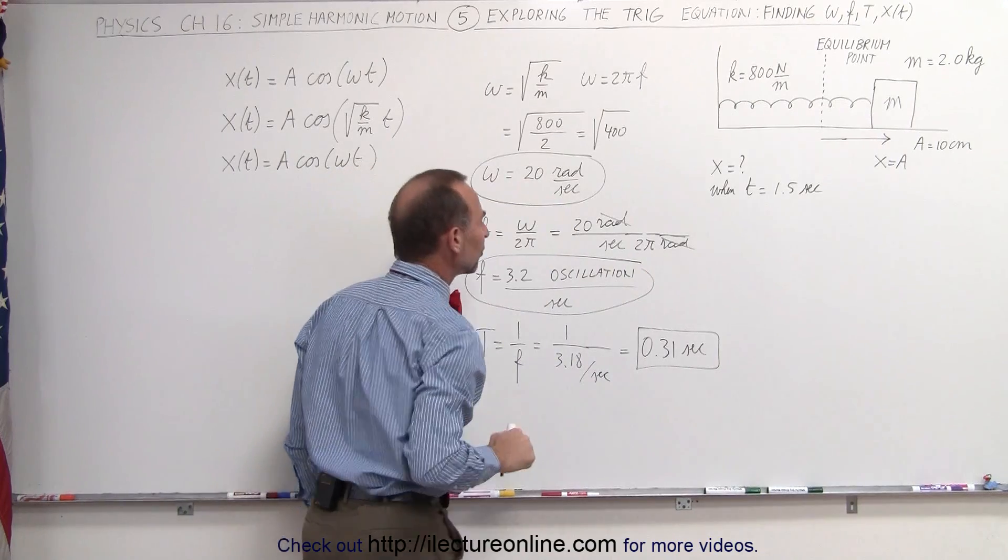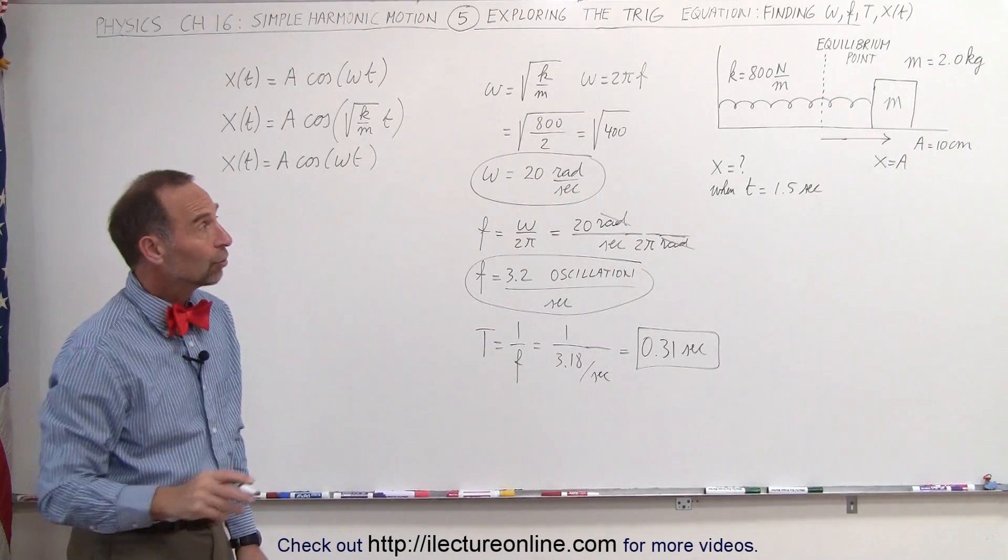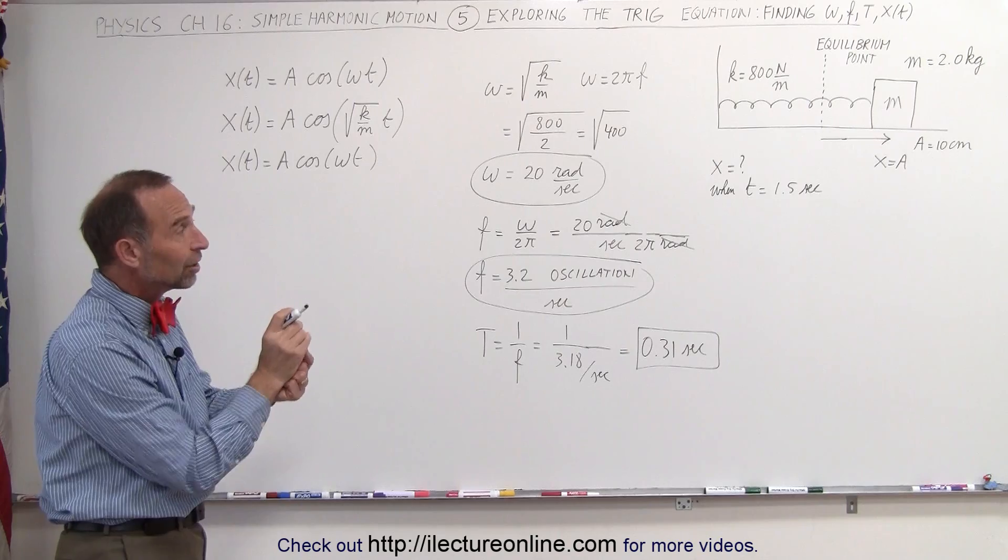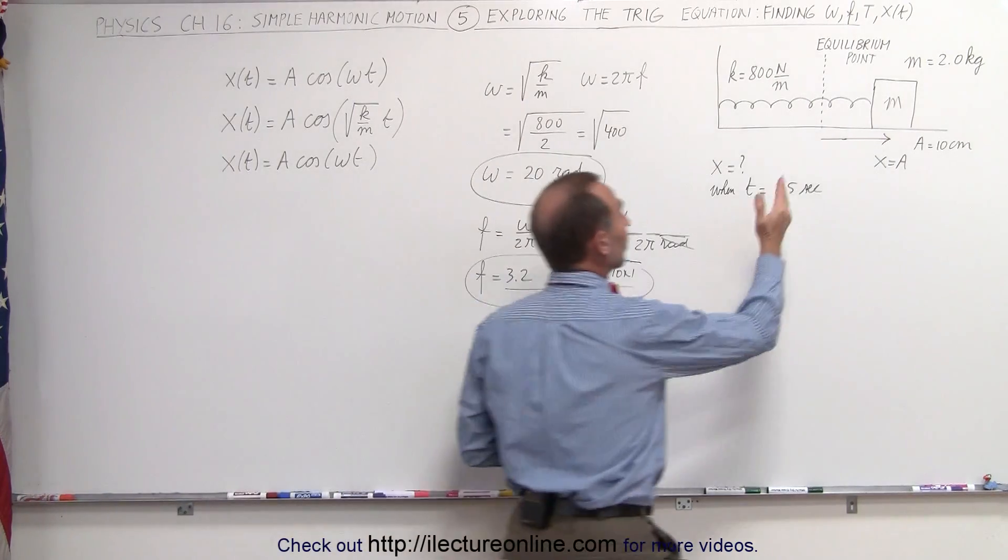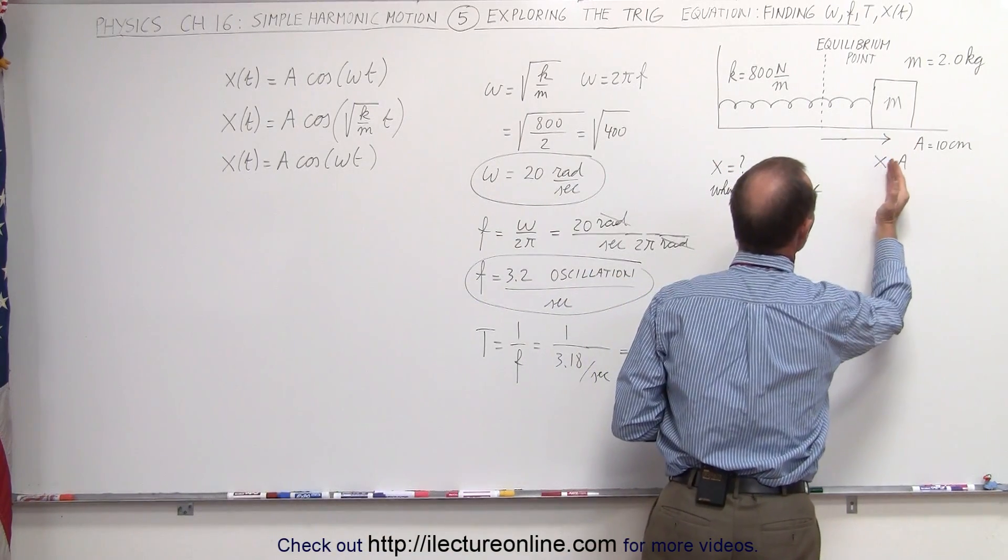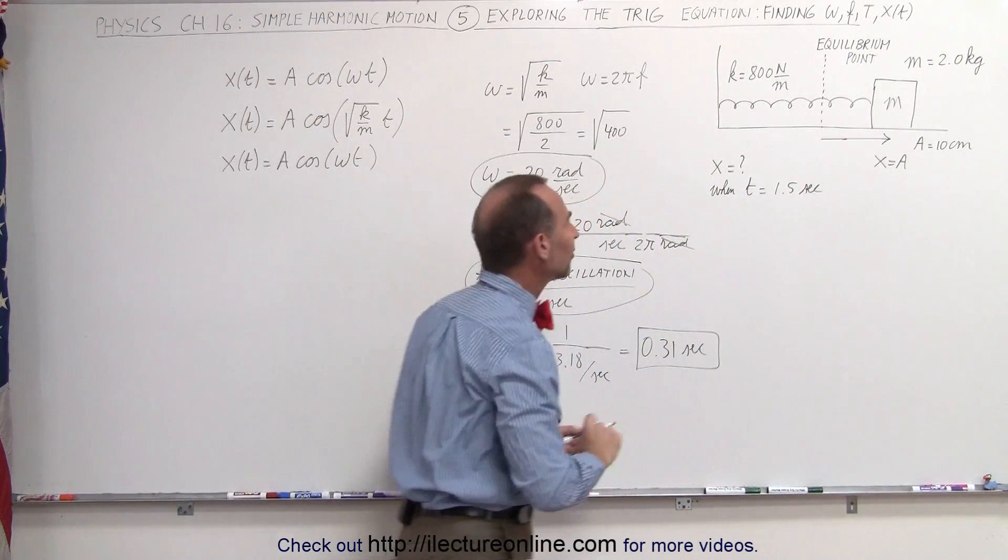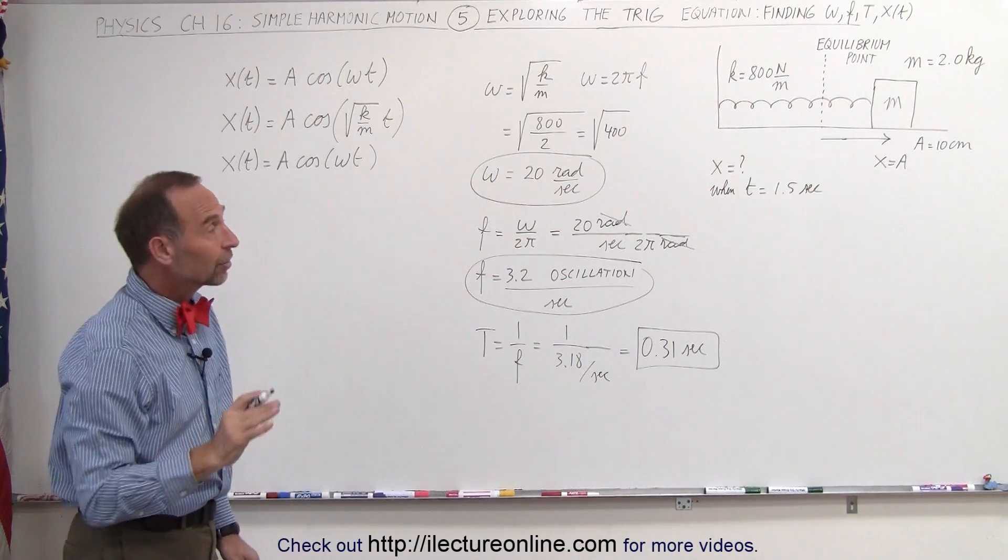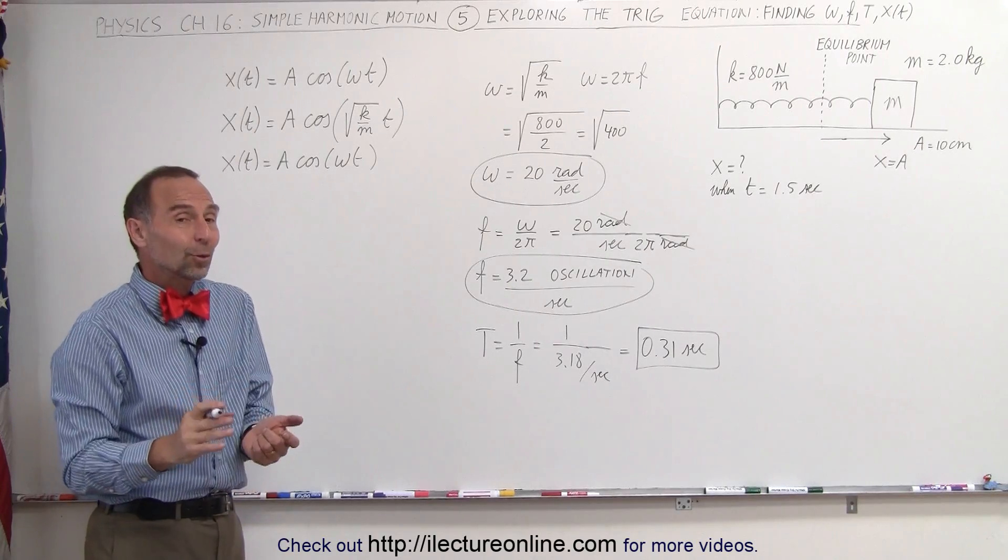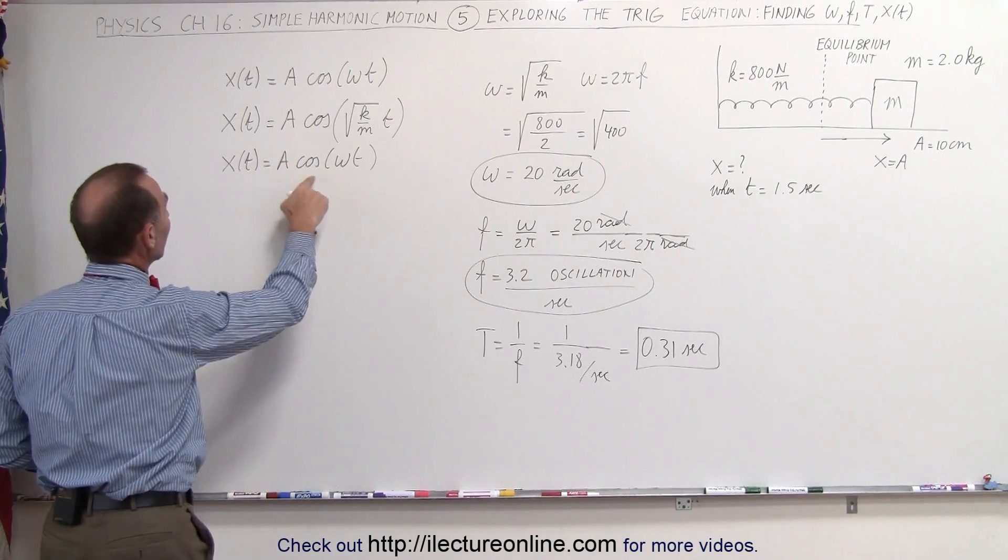And finally, we're supposed to find the position of that object, assuming again that we started out by pulling it off to the right, x equals A at time equals zero, we let go. Where is it at 1.5 seconds later? Notice that could not be answered using the energy equation. You need this equation right here.